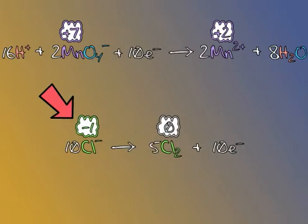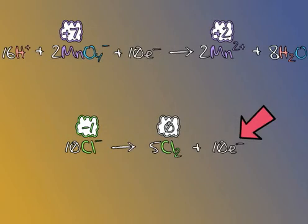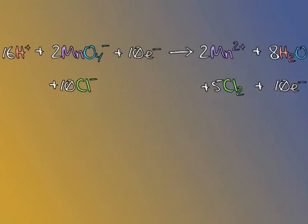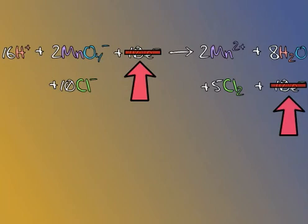With these newly multiplied half reactions, notice that the 10 electrons outputted by the oxidation half reaction can be consumed by the reduction half reaction. We can now sum our half reactions. Since the 10 electrons appear in both the reactants and products, we ignore them, thus producing our final balanced reaction.